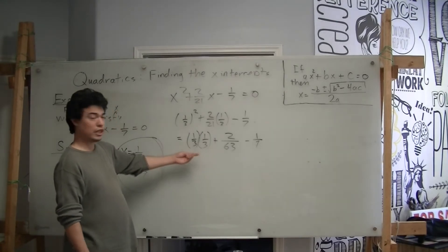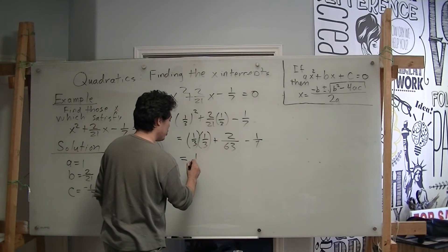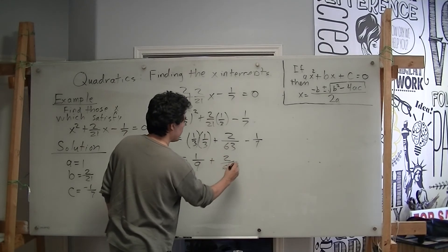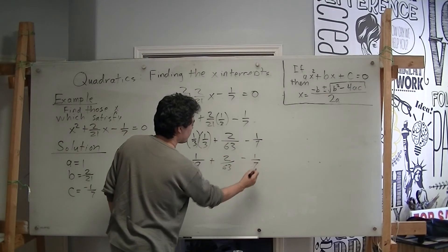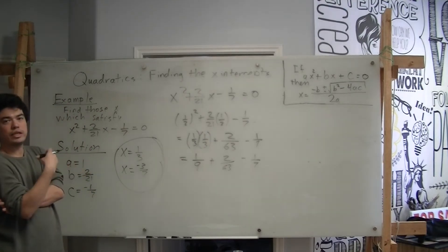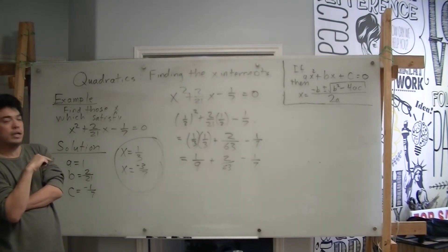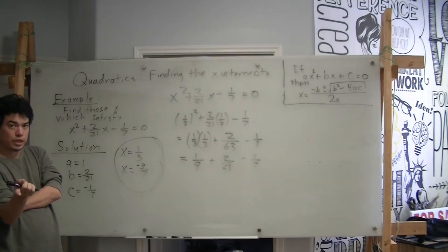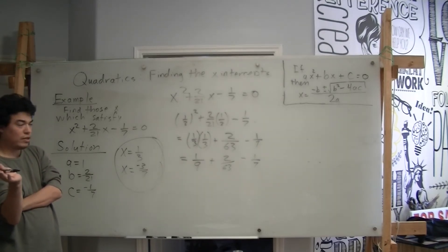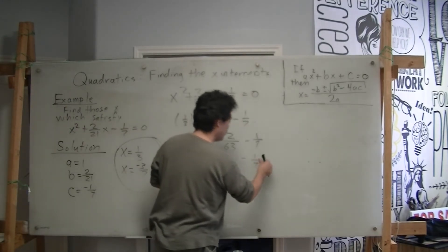Now carrying out this multiplication: 1 third times 1 third — 1 times 1 is 1, and 3 times 3 is 9 — gives 1 over 9. So we have 1 over 9 plus 2 over 63 minus 1 over 7. Here we have a problem: three fractions with different denominators. But we have a lot of hope, because 9 times 7 is 63, and 2 over 63 is already over 63.